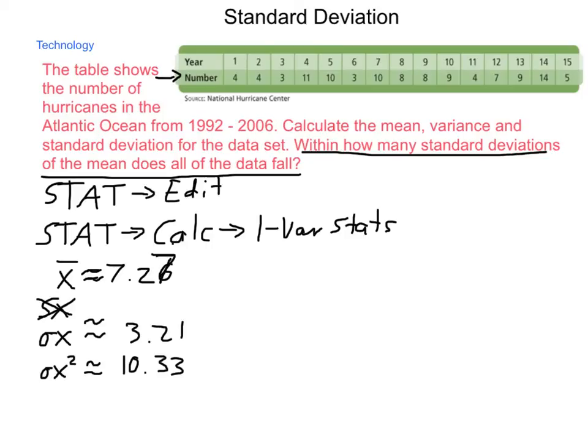Well, our lowest value in our data set is 3. Our largest value in the data set is 14. 2005 was a very rough year for the United States in terms of hurricanes. Now, our mean was 7.27.